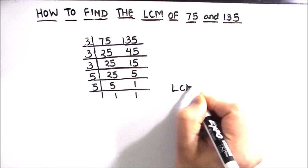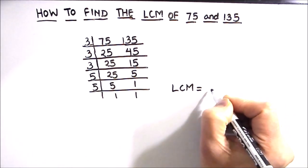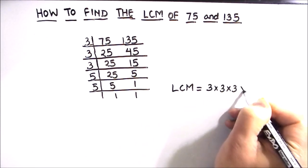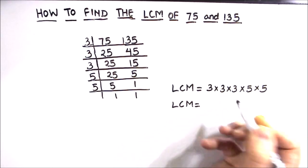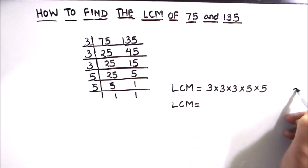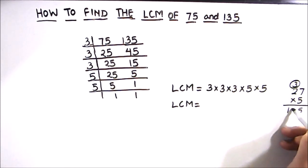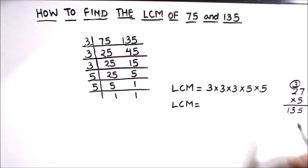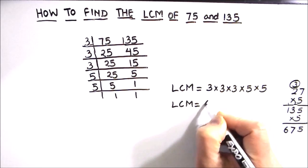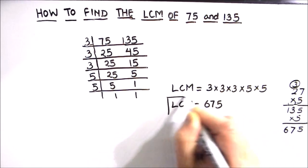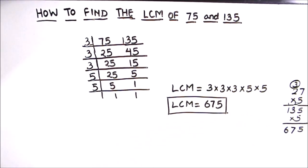Now the LCM is the product of all the numbers on the left-hand side of the ladder: 3×3×3×3×5×5. Let's calculate: 3×3×3=27, 27×3=81... working through: 3×3=9, 9×3=27, 27×5=135, 135×5=675. So the LCM of 75 and 135 is 675.